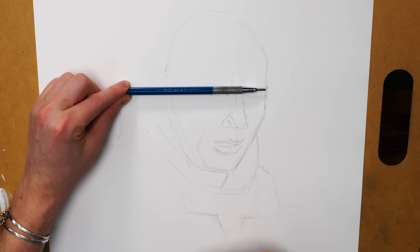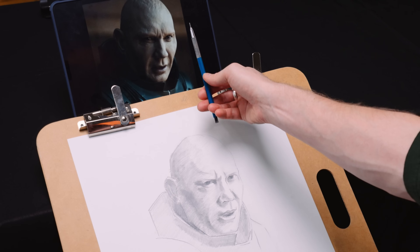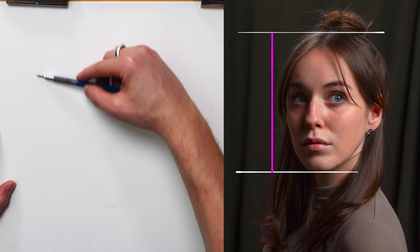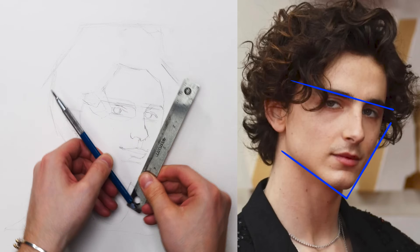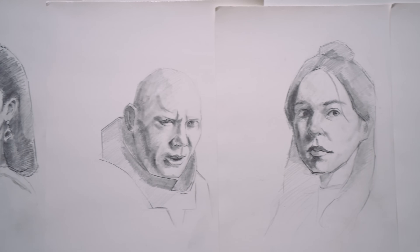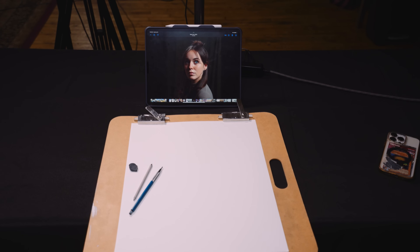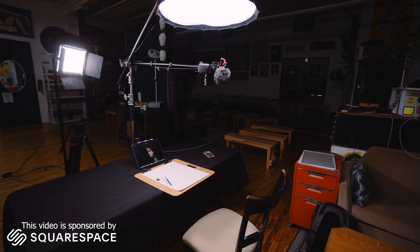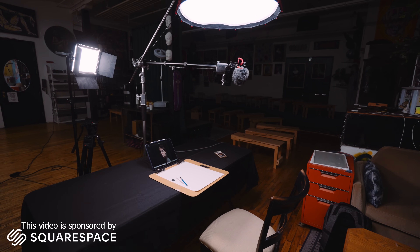The easiest way to draw a realistic face is by measuring and comparing from your photo reference. The way we're going to do that in this video is by using plumb lines, comparing angles, and really just breaking down how to observe a face to then draw. We're going to start with a portrait of my girlfriend and go really slow to break things down. I've got the iPad directly in front of me with my reference so I can measure.